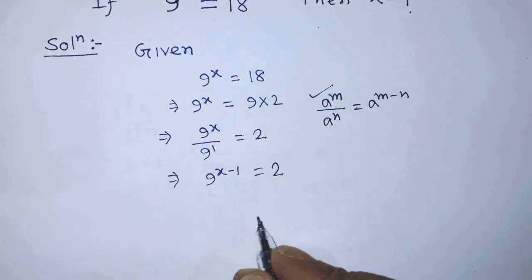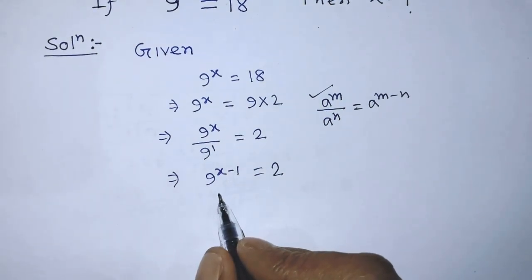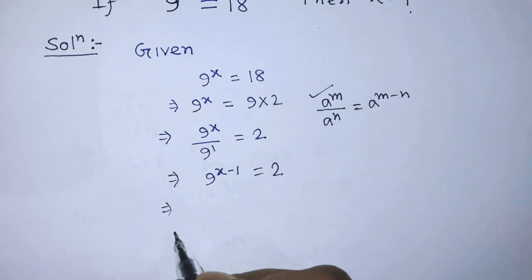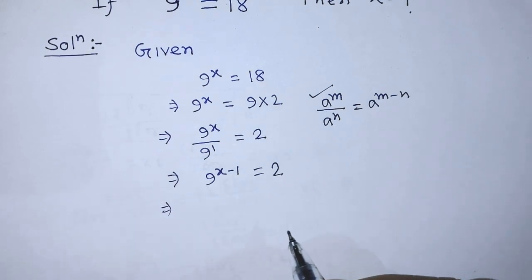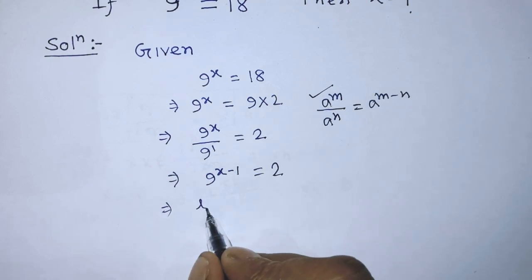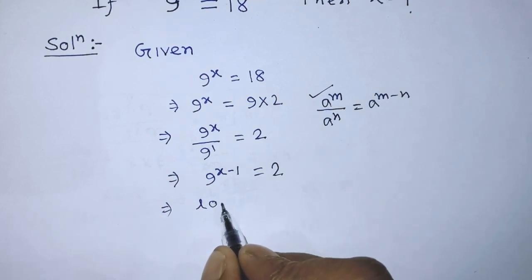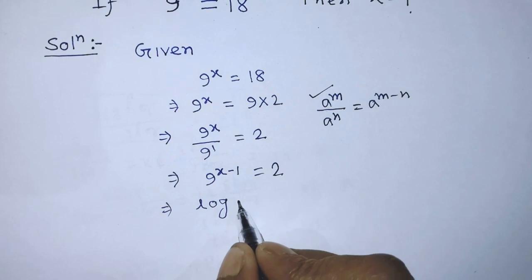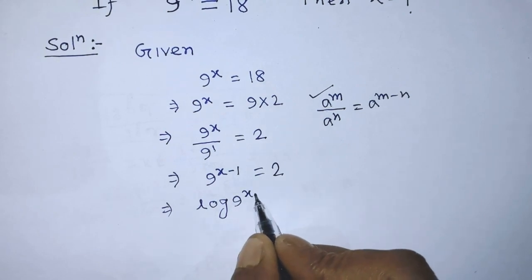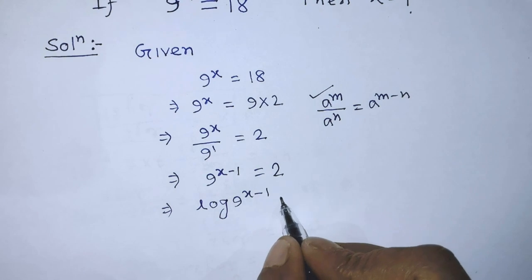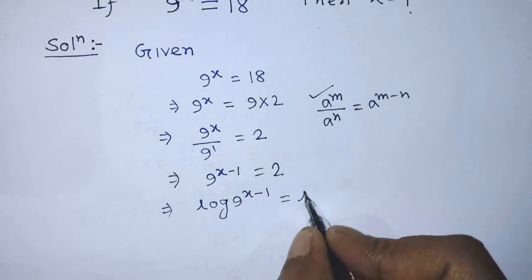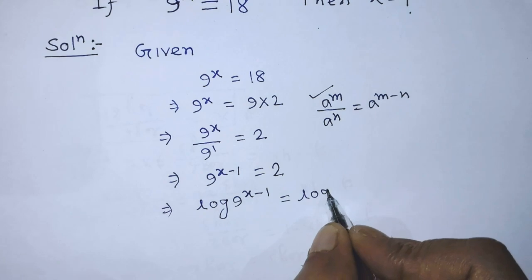To find the value of x from this equation, we have to take log on both sides. After taking log on both sides, we can write on the left hand side log of 9 to the power x minus 1, which is equal to log of 2 on the right hand side.